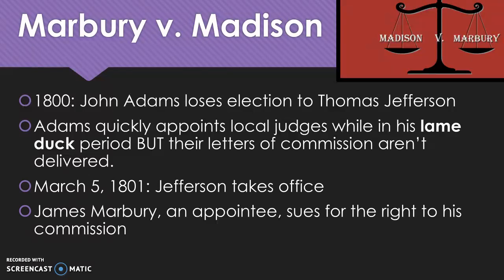John Adams, in what we call his lame duck period — the time between when a president loses an election and when the new president is sworn in — is able to kind of tie up loose ends. Adams, a Federalist, wants to appoint as many local judges as he can who tend to lean more Federalist, before Anti-Federalist Thomas Jefferson takes office. Adams appoints many local judges, but sometimes with such short notice that their letters of commission don't arrive in time. When Jefferson is sworn in in 1801, men such as James Marbury had been appointed to judgeships but had not received their commission in time and couldn't take office.